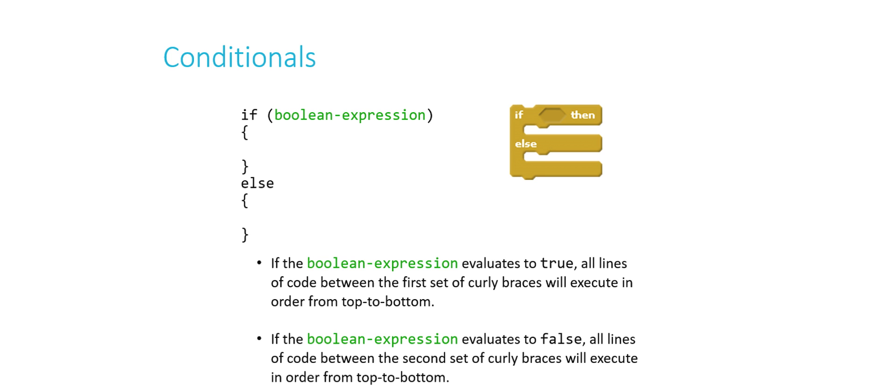And that's analogous to what you see here for C. If Boolean expression, do the stuff between the first set of curly braces. Else, do the stuff between the second set of curly braces. So if the Boolean expression is true, we'll do whatever's between the first set. If the Boolean expression is false, that would trigger the else, and we would do whatever is in the second set of curly braces. Again, top to bottom, all the lines in between the braces.